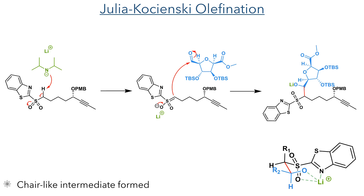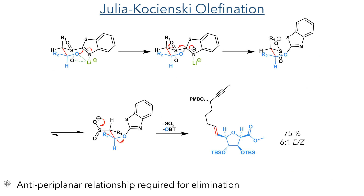This starts with the deprotonation of fragment 2 at the position alpha to the sulfone. The resulting anion then attacks the aldehyde of fragment 1, generating an alkoxide that adopts a chair-like conformation by coordination to the lithium cation. The alkoxide then attacks the benzothiazole ring, with the negative charge stabilised by coordination of the nitrogen to the lithium. This negative charge then flows into the sulfone, breaking the carbon-sulfur bond to generate a sulfonate intermediate. This sulfonate can then adopt a conformation where it is anti-periplanar to the benzothiazole ring, allowing an elimination reaction to occur, generating the desired alkene in a 75% yield with a 6:1 E to Z ratio.